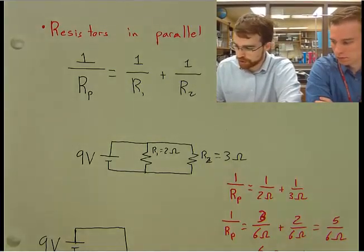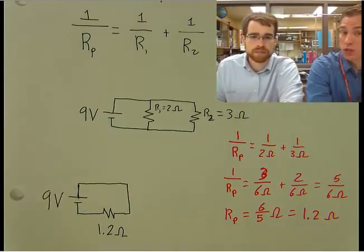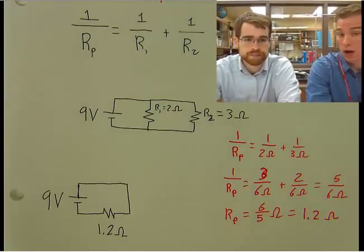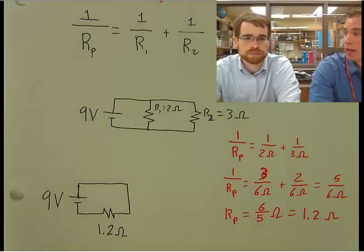So let's look at our example of 2 and 3 ohm resistor. And these are the exact same resistors as we used in the series circuit. And we're going to make some parallels here. So we take 1 over 2 and 1 over 6.